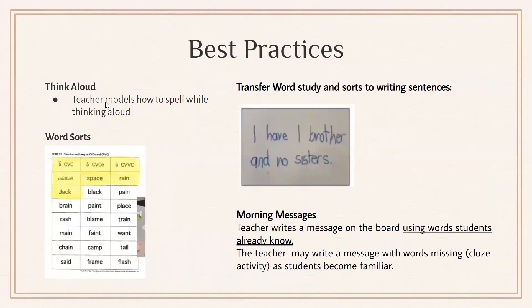More best practices include thinking aloud how to spell certain words, modeling for students what is going on in someone's head while they're writing. If we model looking at the word wall, a personal dictionary, or a bulletin board label, that will help and remind students where to look for a word. There are word sorts where students practice different ways of sorting words, whether it's short A versus long A patterns, or many other patterns available.